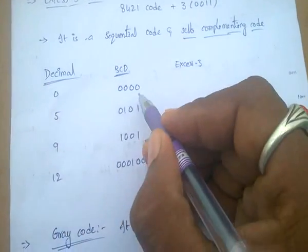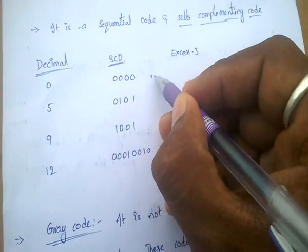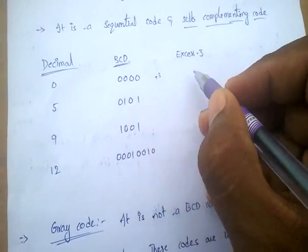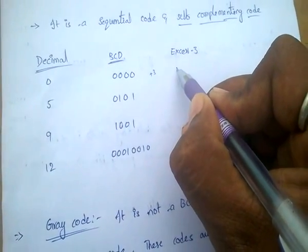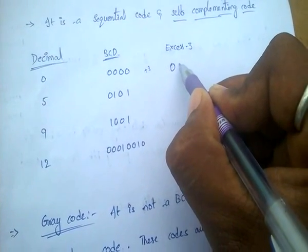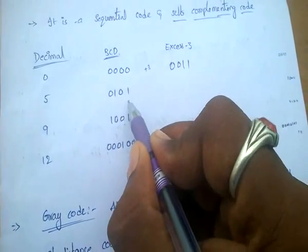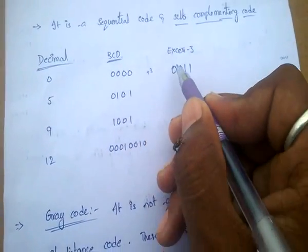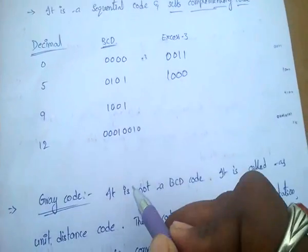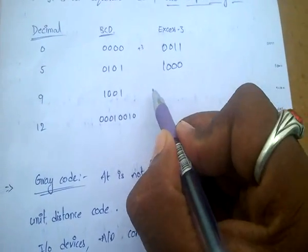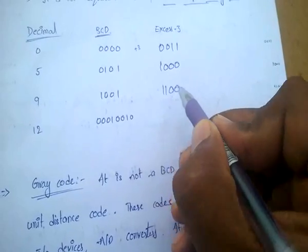For the value 0, BCD is 0000; XS3 means add plus 3, that means 0011. For 5, it is BCD of 5 plus 3, that is 8, which is 1000. For 9, it is 9 plus 3 equals 12, that means 1100.